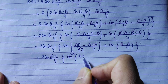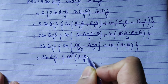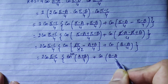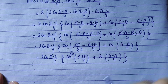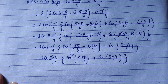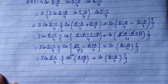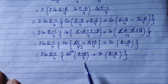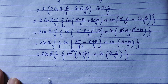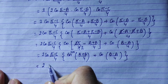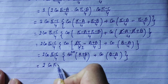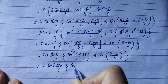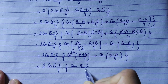So we get 2·cos((π-c)/4) into [sin((a+b)/4) plus cos((b-a)/4)]. Now we will use the condition. We will put pi minus c by 4, so sin((π-c)/4) appears using the substitution from the condition a+b+c = π.